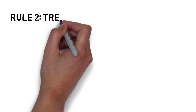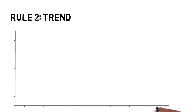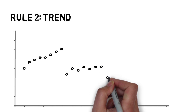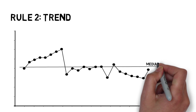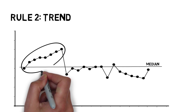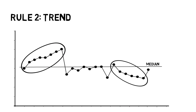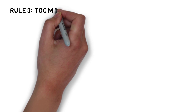Rule 2, the trend, is evident when the run chart shows 5 or more consecutive points all going up or all going down. If the value of 2 consecutive points is the same, ignore 1 of the points and continue counting, as points that are the same cannot break or make a trend.